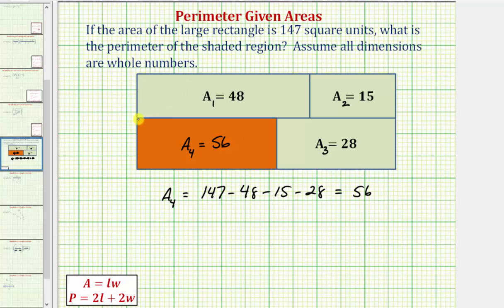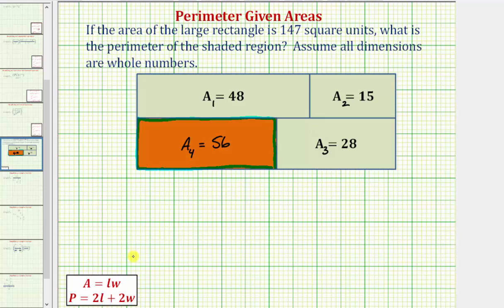Now the goal is to determine the perimeter of this orange rectangle. To do this, we'll work on determining the dimensions of each of the four smaller rectangles. To find the area of a rectangle, we find the product of the length and the width. Because 15 has fewer factors than 48, 28, and 56, let's first determine the dimensions of that rectangle.